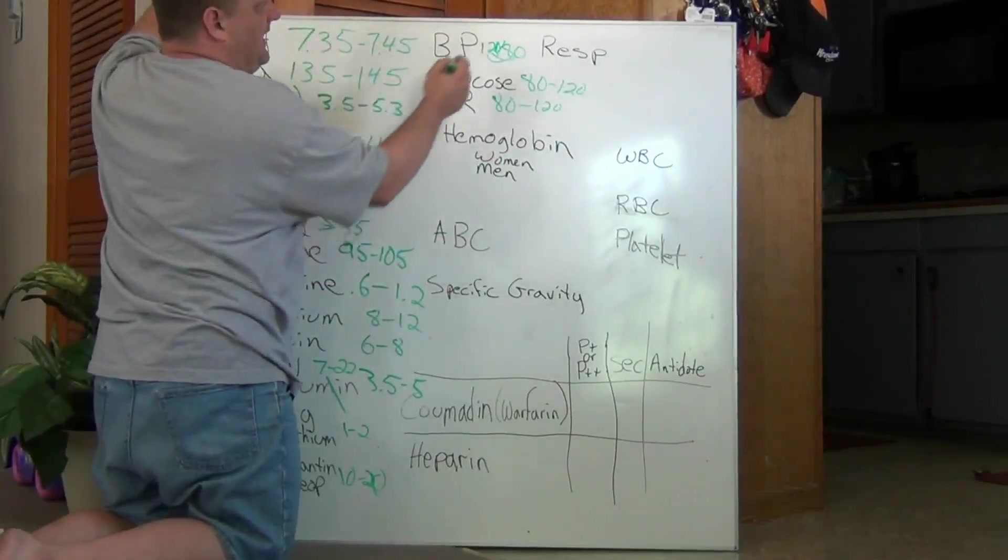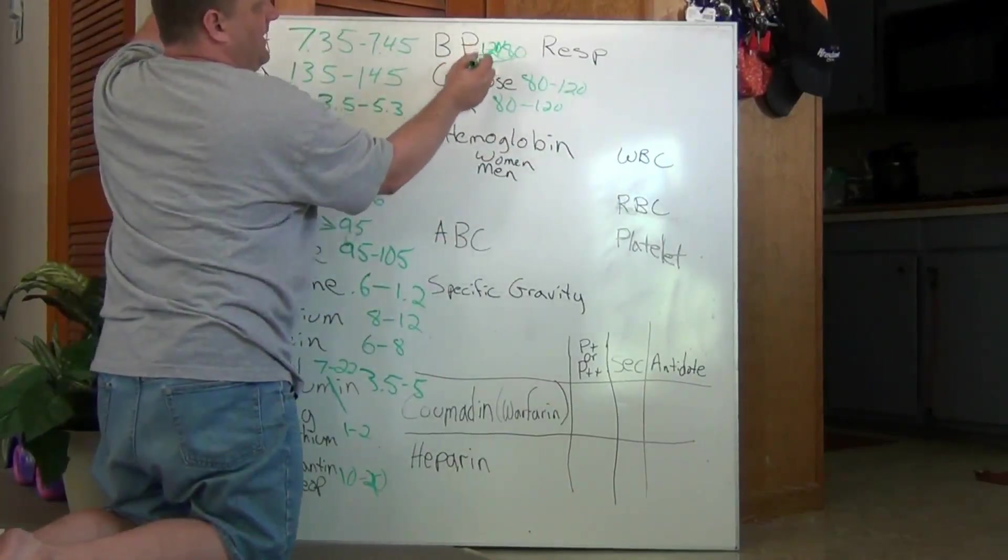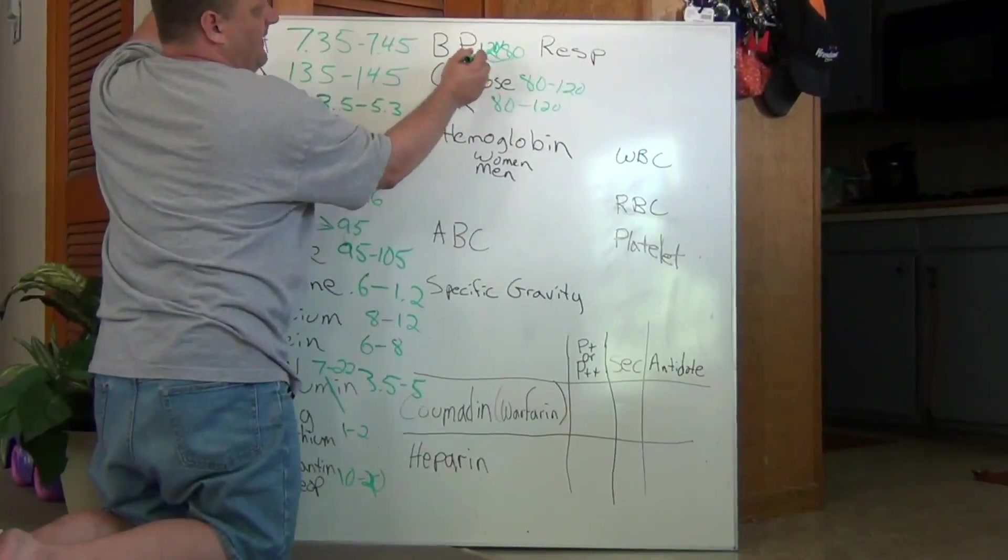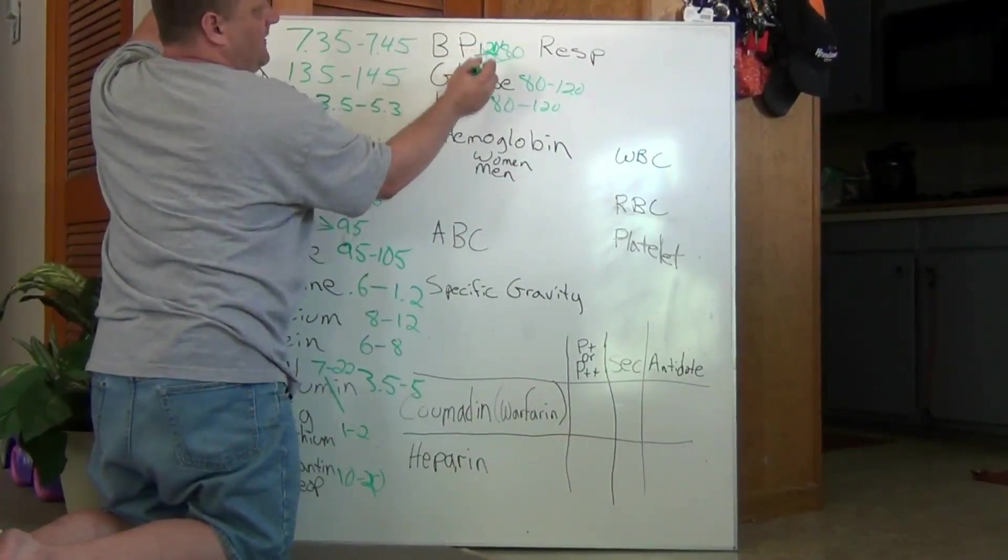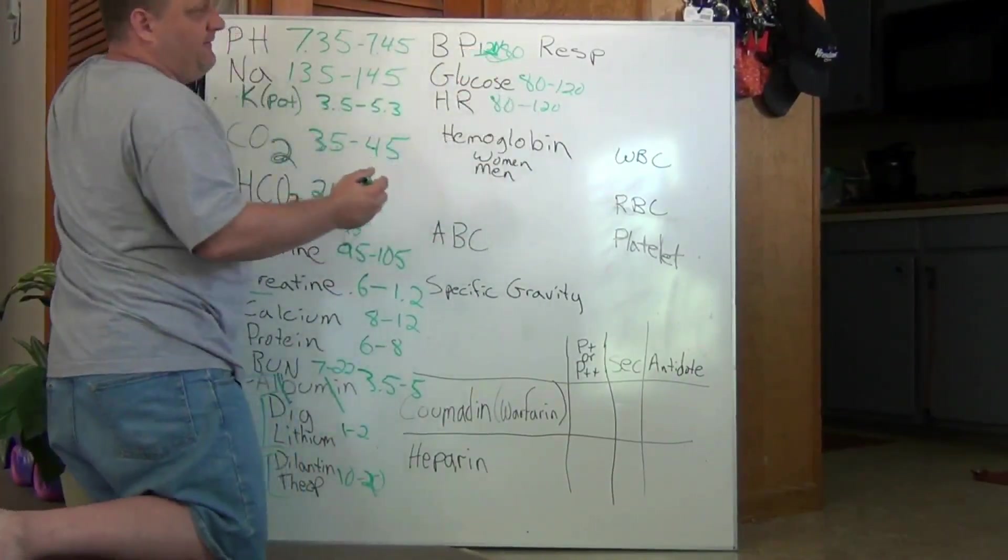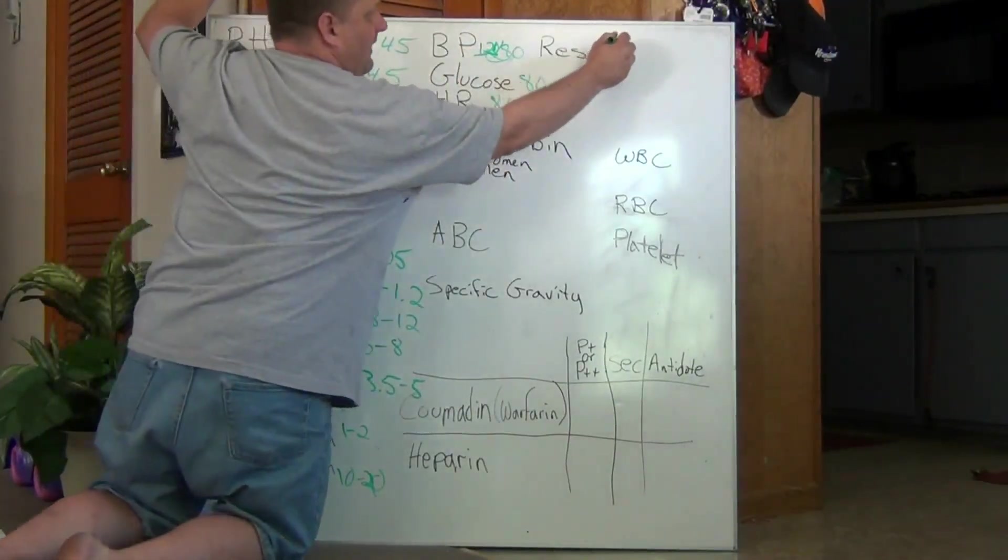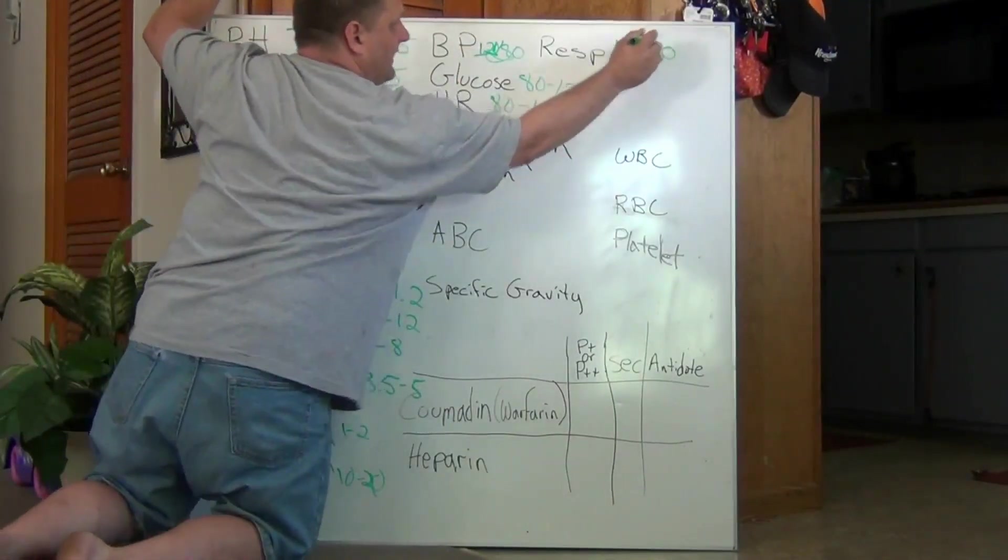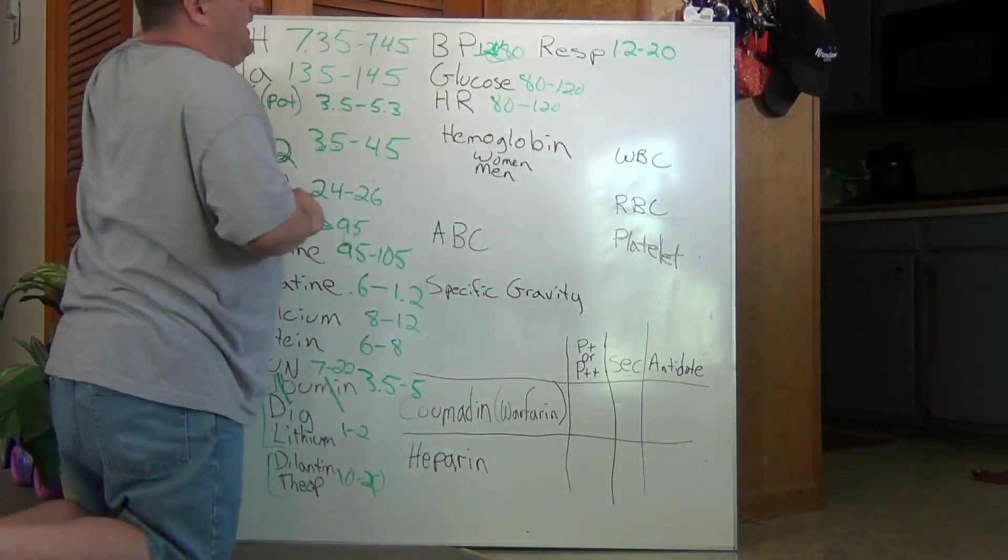The respiratory, if we take the 12 in the blood pressure off the 120 and the 20 from the 120, we have a respiratory value of 12 to 20. That's normal respiratory.